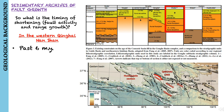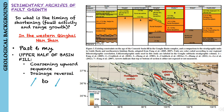In the upper half of the basin fill, there is a coarsening upward sequence and a pronounced drainage reversal from north-flowing to south-flowing paleocurrents. Moreover, this reversal corresponds to fanning dips that are interpreted as growth strata in the proximal footwall of the Qinghai-Nanshan fault network.